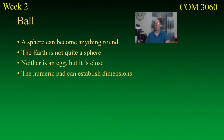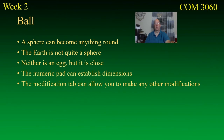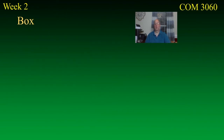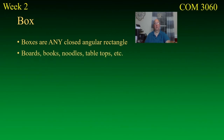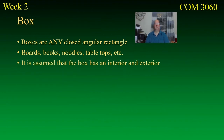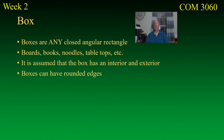The numeric pad is great for establishing dimensions, and you can modify shapes using the modification tools. The box is useful because almost anything flat will be a box — a plank, a stick of gum, a noodle. The box assumes an interior and exterior, and surfaces are usually opaque, though you can change that. One secret: boxes can have rounded edges, which is one of the only primitives where that's easily done.